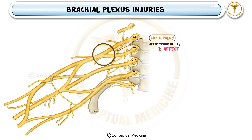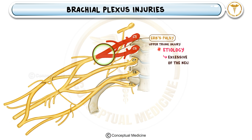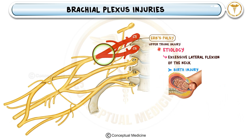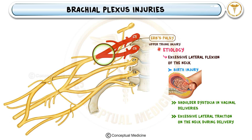Erb's palsy is an upper trunk injury involving C5 and C6. It occurs when the C5 and C6 nerve roots are damaged. The most common cause is excessive lateral flexion of the neck, which can happen due to birth injuries or trauma. In newborns, this injury is often associated with shoulder dystocia, a complication during vaginal delivery where the baby's shoulder gets stuck behind the mother's pubic bone. If excessive traction is applied to the head during delivery, it stretches the upper trunk of the brachial plexus.